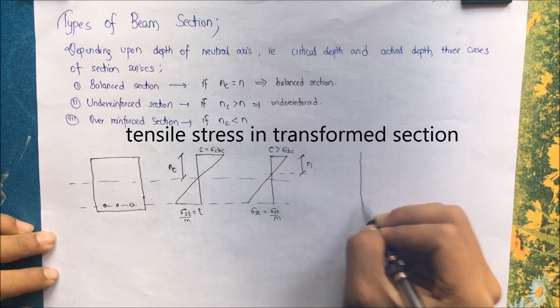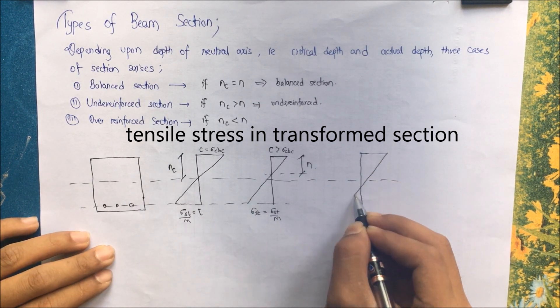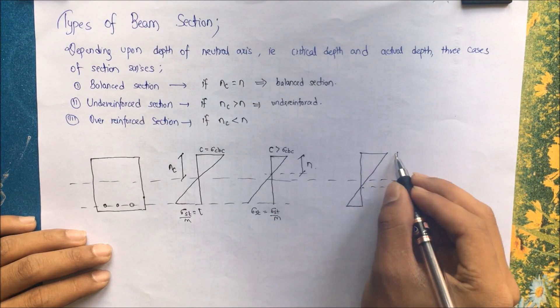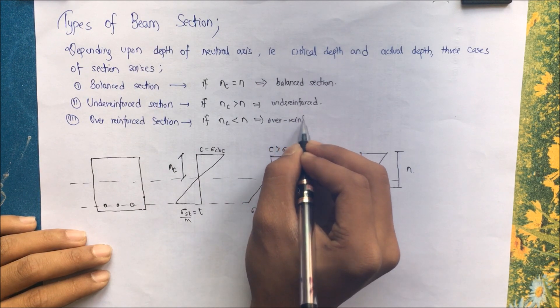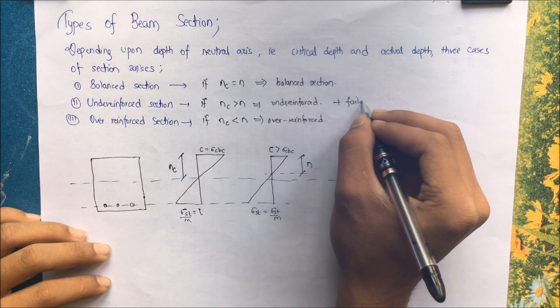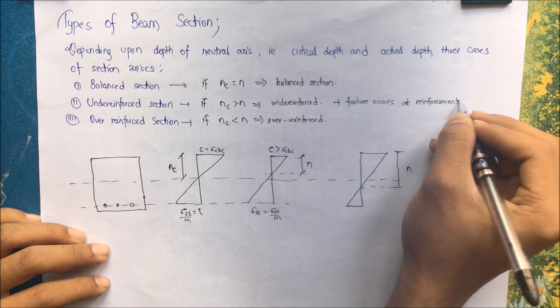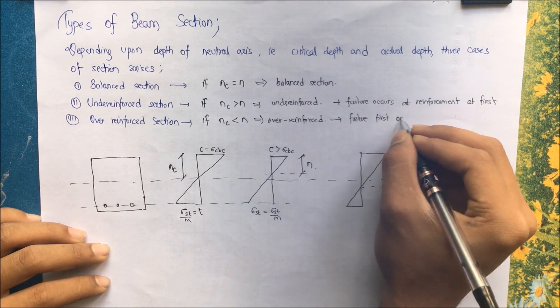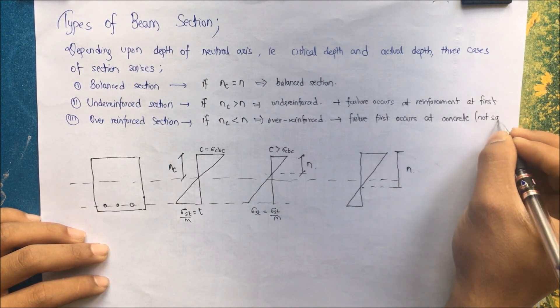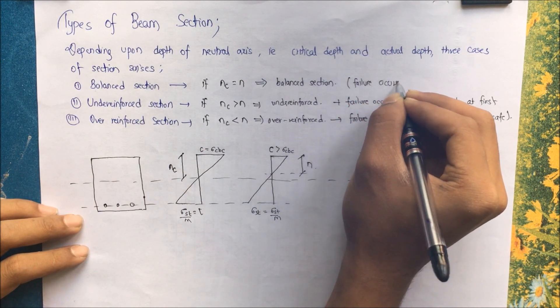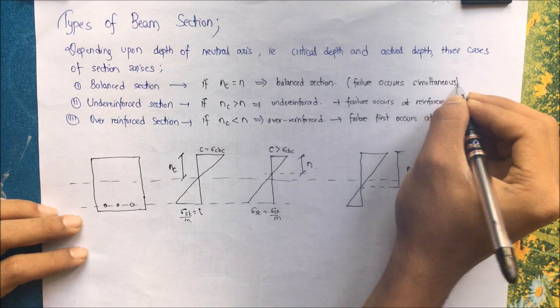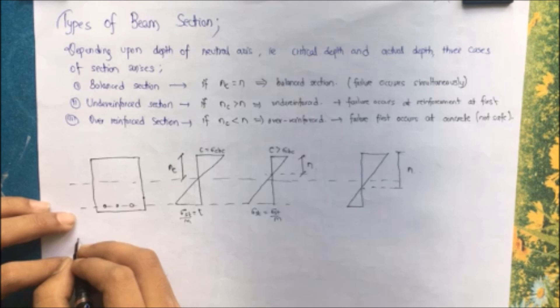For an under-reinforced section, NC is greater than N (critical depth exceeds actual depth); stress in steel reaches its limit first. For an over-reinforced section, NC is less than N; concrete fails first, which is much more dangerous as there is no prior warning before failure. In an under-reinforced section, failure occurs at the reinforcement first, while in the balanced section failure occurs simultaneously in both steel and concrete.